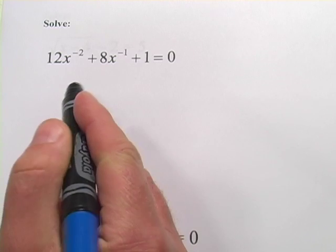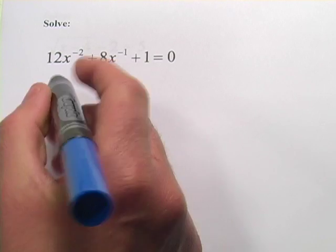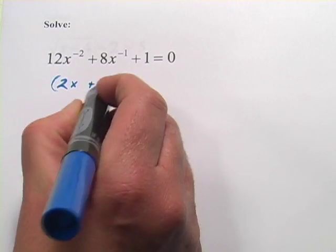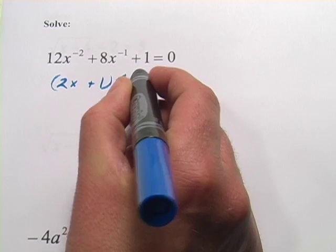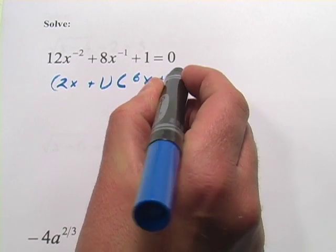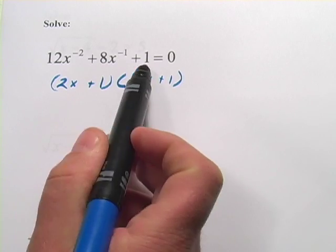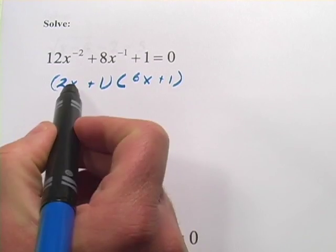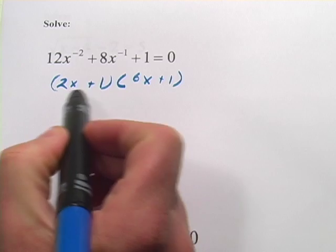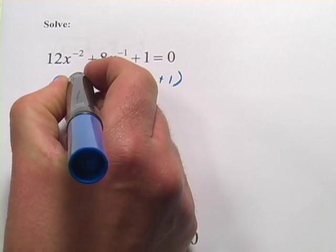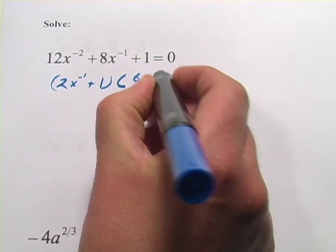And let's see, I think we can factor this one. So I think you'd come up with 2x plus 1 and 6x plus 1, and that would add up to 8 and multiply to 1. So if this was a regular quadratic, that would be our two factors, except we've got negative exponents, so this is going to be x to the negative 1, x to the negative 1.